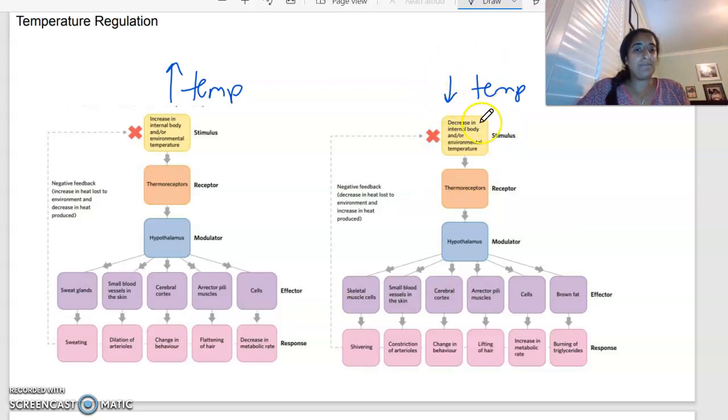In terms of decreased temperature, again, the thermoreceptors, I'm going to send a message to the hypothalamus. But this time, it's going to be our skeletal muscle cells, our small blood vessels, our cerebral cortex, our erector pili muscles, our cells, and our brown fat as the effectors.